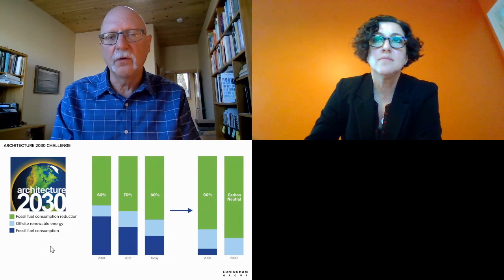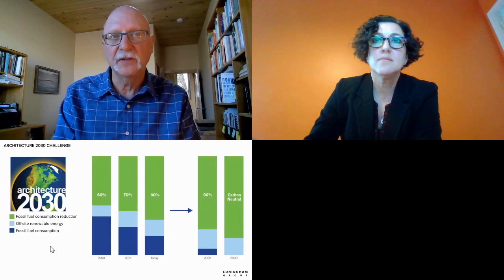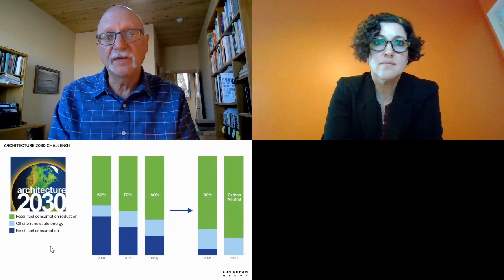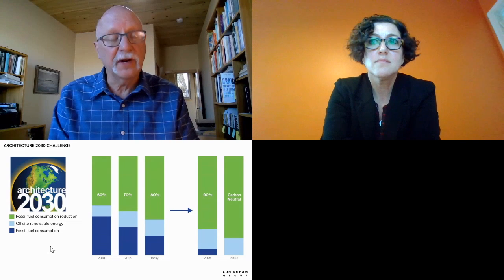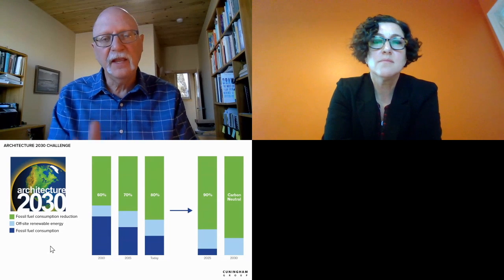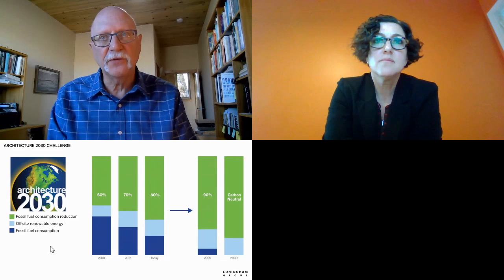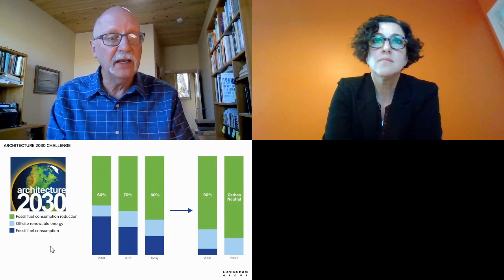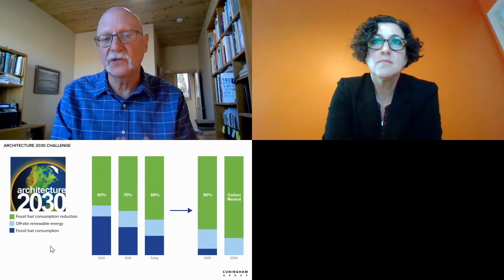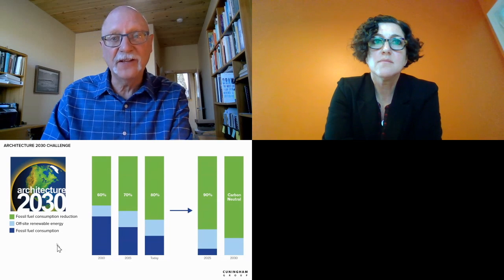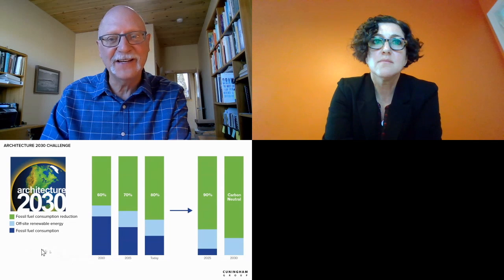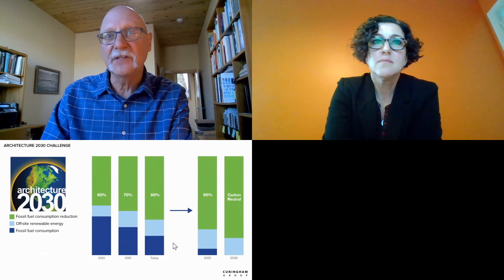When Architecture 2030 started, the goal was to reduce below the average building by 60%. From 2015 through 2019, the target was 70%. Today through 2024, the target is 80%. In 2025, it will be 90%. And by 2030, all design firms that have signed on have committed to seeking carbon-neutral buildings. It's a very aggressive challenge with a lot of work to be done.